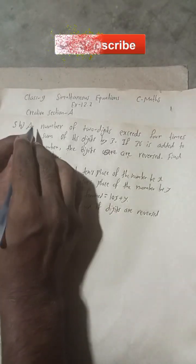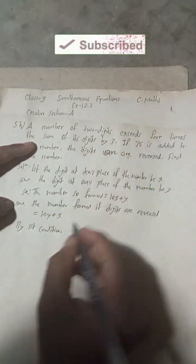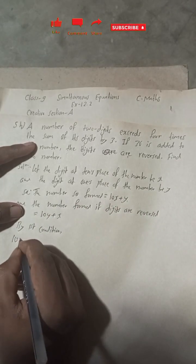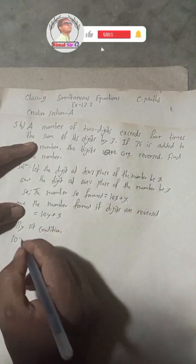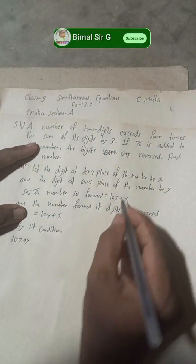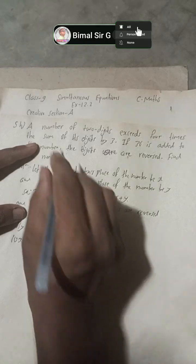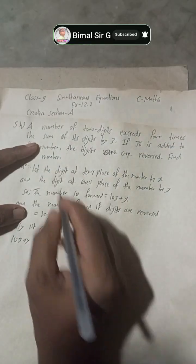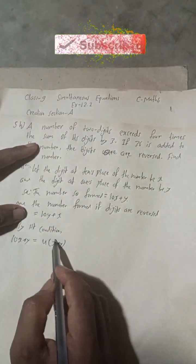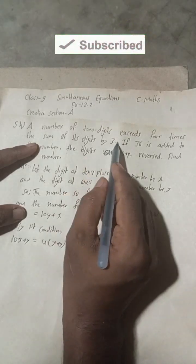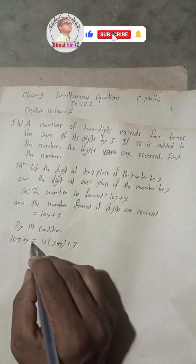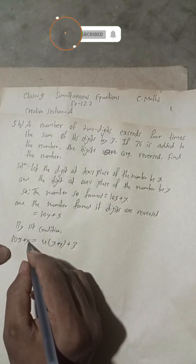By the first condition: a number of two digits exceeds four times the sum of its digits by three. So our number 10x + y exceeds four times the sum of digits, which is 4(x + y), by three. This means 10x + y equals 4(x + y) + 3.